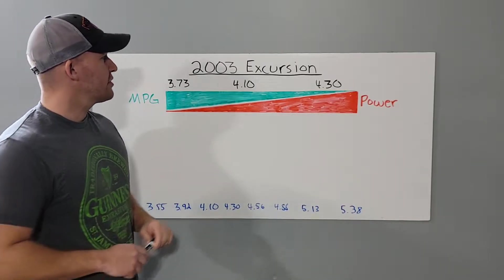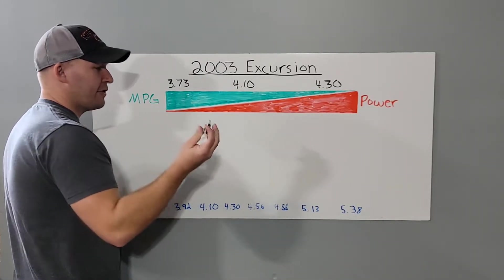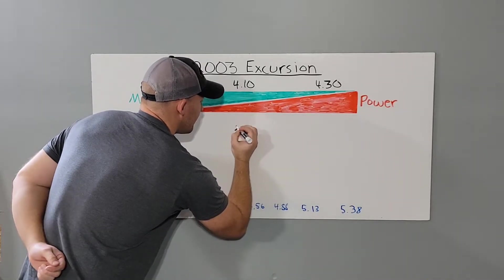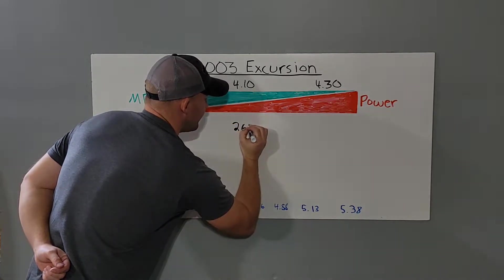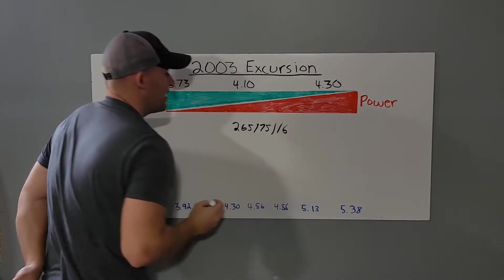So this 2003 Excursion came from the factory with 4.30s and the factory tire size was 265-75-16s.